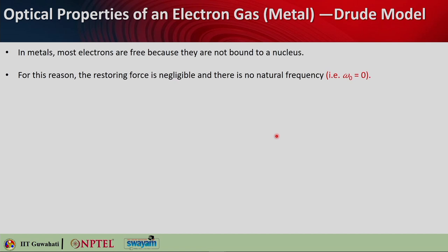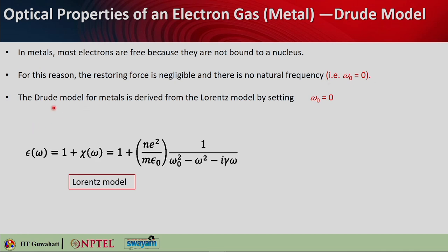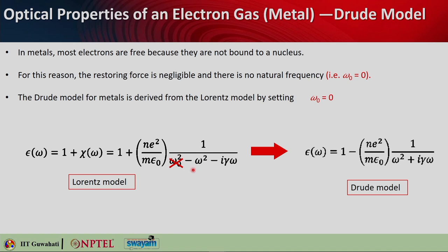Now let us describe the optical properties of an electron gas in metal. In the case of metal, most electrons are free — not bound to any nucleus. Therefore, the spring term or restoring force term becomes negligible, meaning there is no natural frequency of oscillation. We can take ω₀ = 0 for metals. The Drude model is a simplified version of the Lorentz model where the ω₀ term is set to zero.